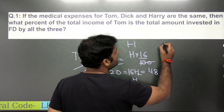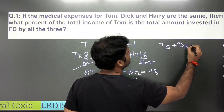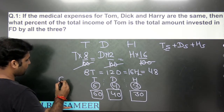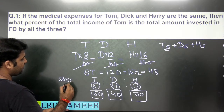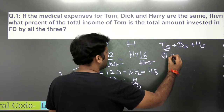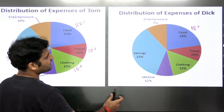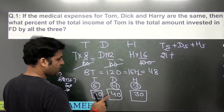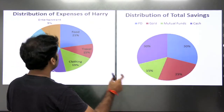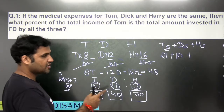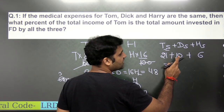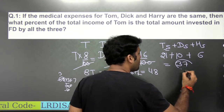Tom's saving is 35% of 60 = 21 rupees. Dick's total income is 40 and he saves 25%, so 25% of 40 = 10 rupees. Harry's income is 30 and he saves 20%, so 20% of 30 = 6 rupees. The total saving by all three is 21 + 10 + 6 = 37 rupees.